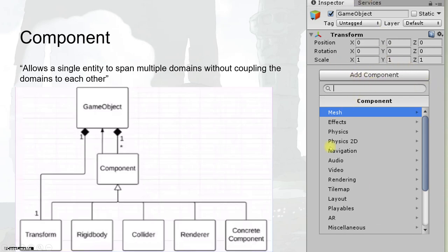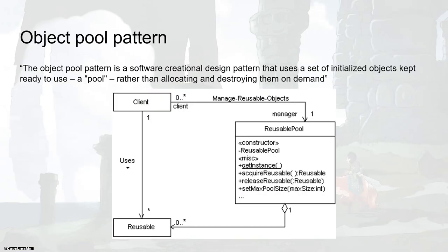We can see the component pattern in both Unity and Unreal Engine. In Unity, using the Add Component button there are many various components you can add to each game object. In Unreal, if you open a character blueprint or actor blueprint, you can also add components to that particular character or actor.